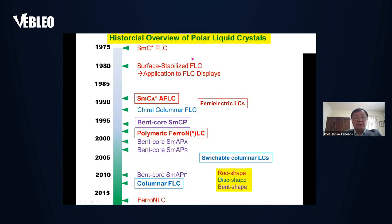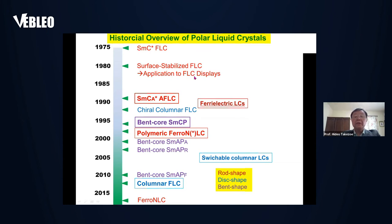This is the historical overview of polar liquid crystals. In 1975, the first ferroelectric liquid crystal, smectic C*, was discovered. After five years, surface stabilization of this molecule opened the application to FLC displays. Since then, we discovered many types of polar liquid crystal phases, such as smectic C*, antiferroelectric, and bent-core smectic C polar phase, and ferroelectric polymeric liquid crystals and columnar ferroelectric liquid crystals.